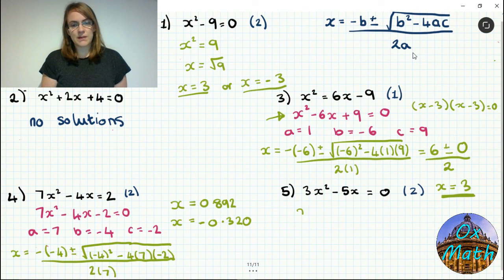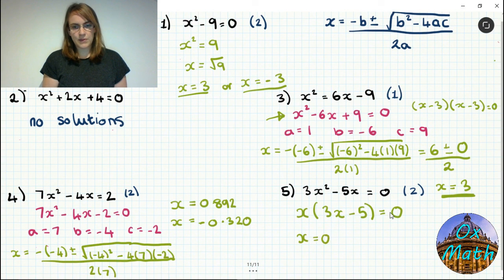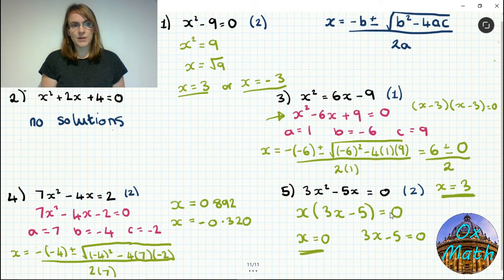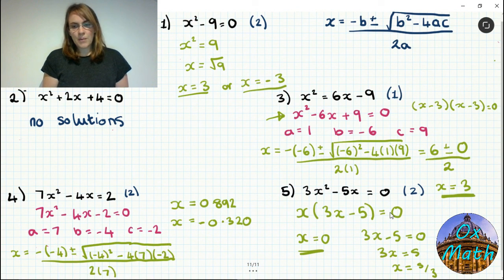For number five, it's easier to factorize because there's no constant term — take out x as a common factor: x times 3x minus 5 equals 0. Either x equals 0 (first factor), or 3x minus 5 equals 0 giving 3x equals 5 so x equals 5 over 3. Plugging x equals 0 into 3x squared minus 5x gives 0. For x equals 5/3, I'd always leave the answer as a fraction rather than a recurring decimal as it's more accurate.